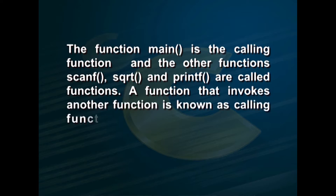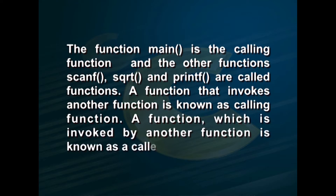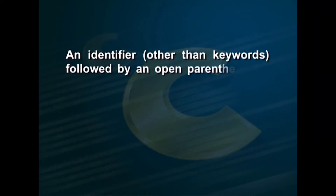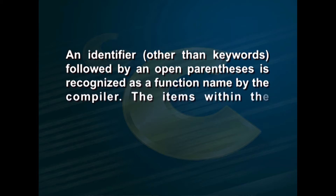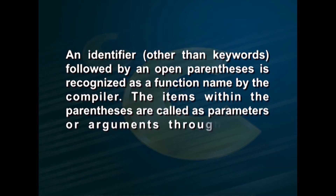A function that invokes another function is known as a calling function. A function which is invoked by another function is known as a called function. In C, main is the first calling function in any program. It is a special function which tells the compiler to start the execution of a C program from the beginning of the function main. It is not possible to have more than one main function because the compiler will not know where to start execution. An identifier other than keywords followed by an open parenthesis is recognized as a function name by the compiler. The items within the parentheses are called parameters or arguments through which information is passed to the function. A function may calculate and return a value to the calling function; information is returned from functions by a return statement. Once the function has been executed, control will be returned to the point from which the function was accessed.